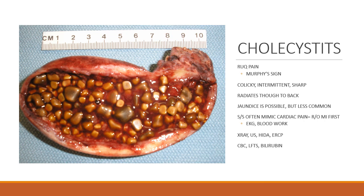Diagnosis is done through abdominal and chest x-rays, ultrasound of the gallbladder, pancreas, and liver, HIDA scans, and an ERCP. Important lab work includes a CBC to look for evidence of infection, liver function tests to look for evidence of obstruction, and a bilirubin to look for evidence of obstruction.